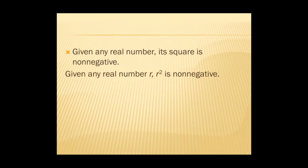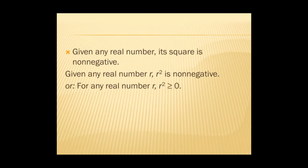Next example: Given any real number, a squared is non-negative. Given any real number r — where r is the variable for a real number — r squared is non-negative. Or, for any real number r, r squared is greater than or equal to zero.